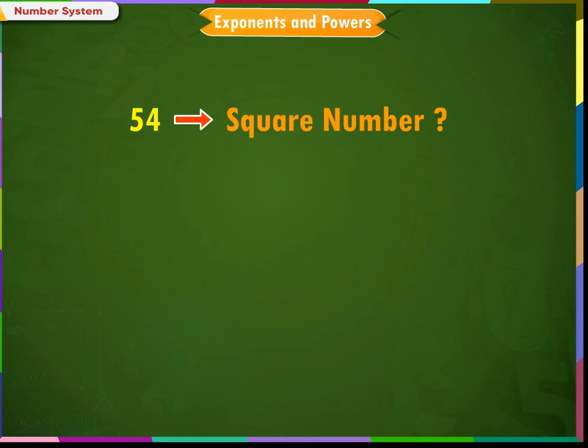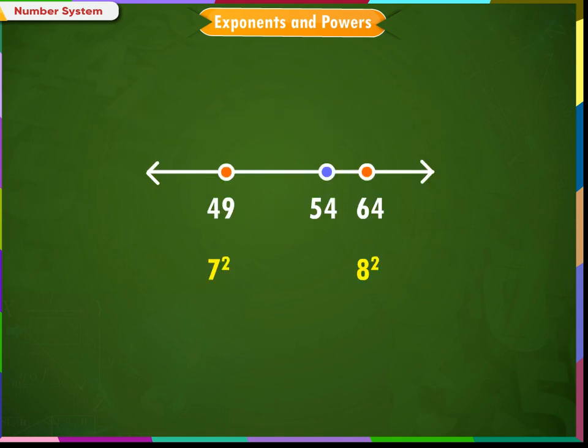Every number is not a square number. For example, is 54 a square number? No. The square of 7 is 49 and the square of 8 is 64. 54 lies between 49 and 64. If 54 is a square number, it must be between 7 and 8. But there is no natural number between 7 and 8. So, 54 is not a square number.